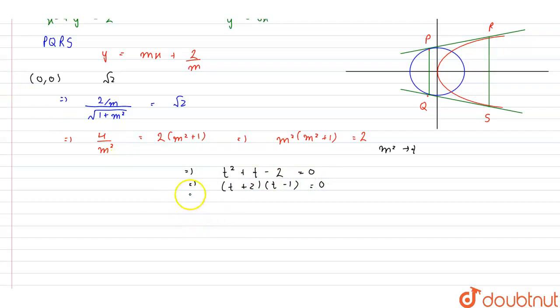Therefore the required values of t are 1 and -2. But since t = m², therefore it cannot take any negative value. Therefore we get t = 1. So m² = 1, therefore m = ±1.